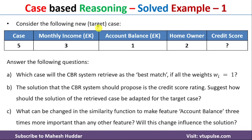This is the target case given to us. In this case, monthly income is equal to 3, account balance is equal to 1, and homeowner is equal to 2. Given this target case, we need to find the credit score for this target case. We will answer each of the following questions one by one.